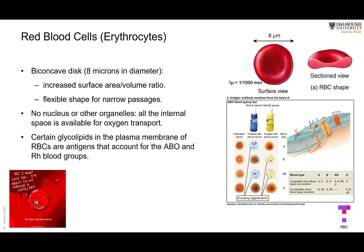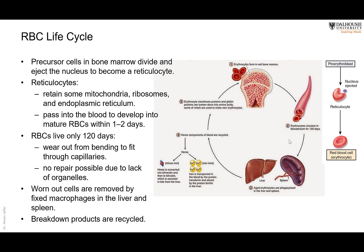In addition to making the cell slippery, certain glycolipids in the plasma membrane — carbohydrate attached to lipid molecules — form what we call blood group antigens. These include either the ABO blood group or the Rh blood groups (positive or negative), determined by the specific glycocalyx present in the wall of the RBC.